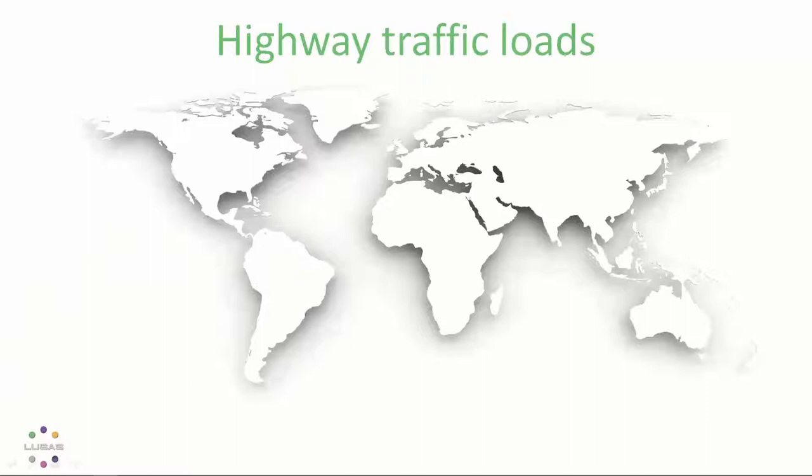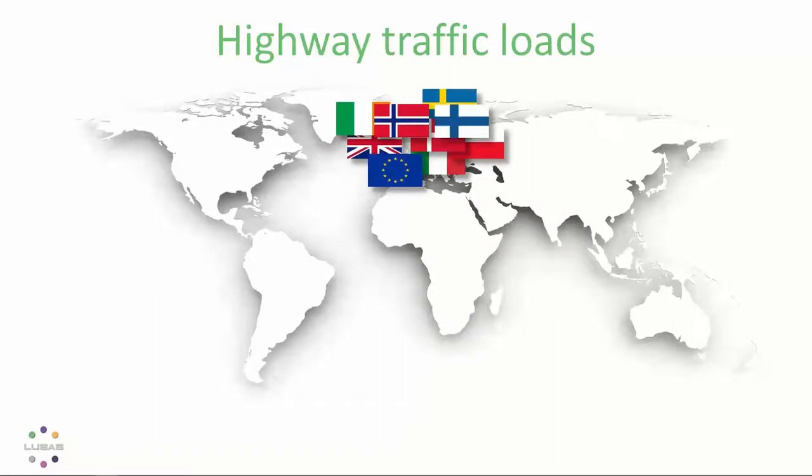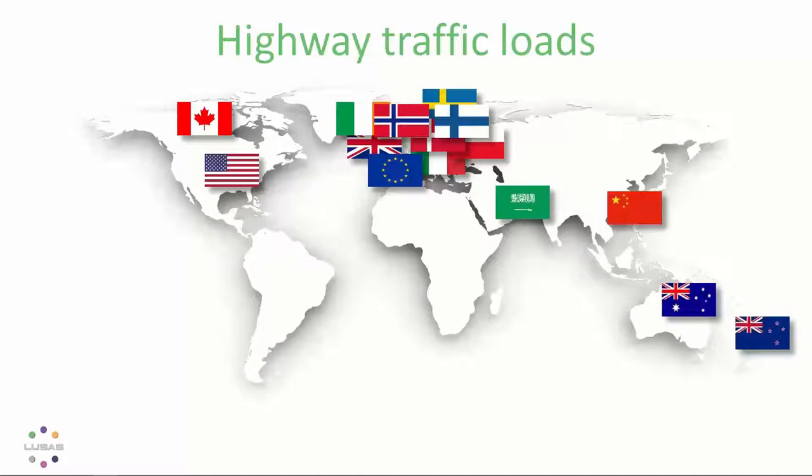So the vehicle optimiser works to the Euro code EN 1991-2 and various national annexes, including Ireland, Denmark, Sweden, Norway, Italy, Poland, etc. UK codes, including superseded ones and also the recently issued CS 454, including both load models. World coverage goes on to include Canada and the US with even the state manuals for individual states in the US taken into account. Saudi Arabia, China, New Zealand and Australia, again, including the assessment code and new inversion 19, the Indian IRC 6 code.